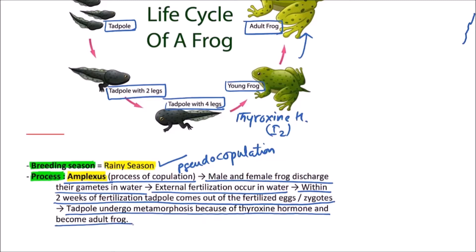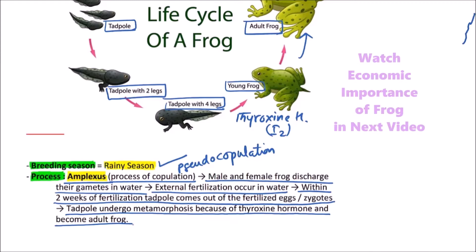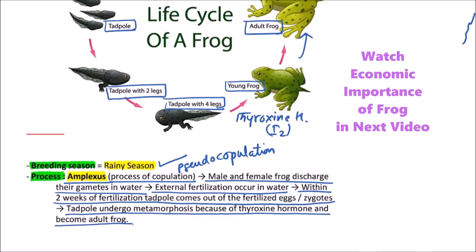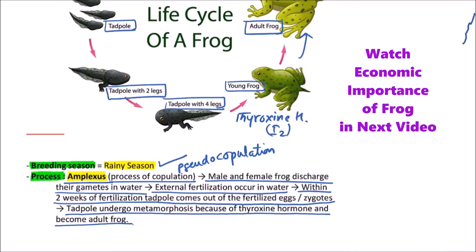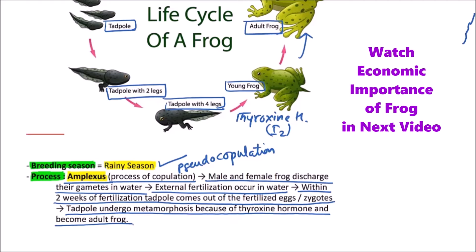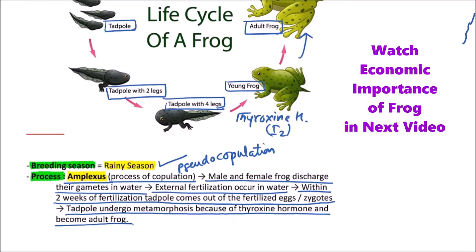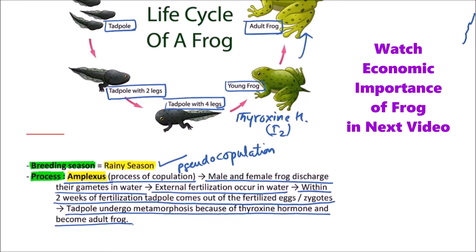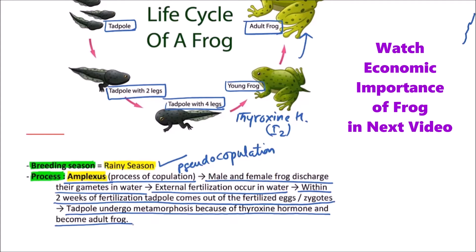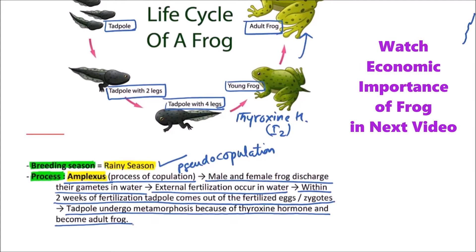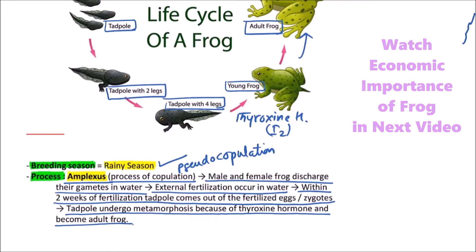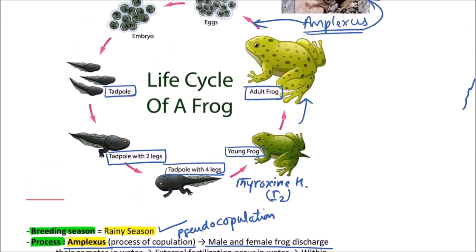The tadpole will lose its tail, grow in size, and become an adult frog. Importantly, if iodine is absent in the water, the tadpole will not undergo metamorphosis into an adult frog — it will instead grow into a giant tadpole. The same outcome occurs if the thyroid gland is removed from the tadpole; it will remain as a tadpole and will not be converted into an adult frog.